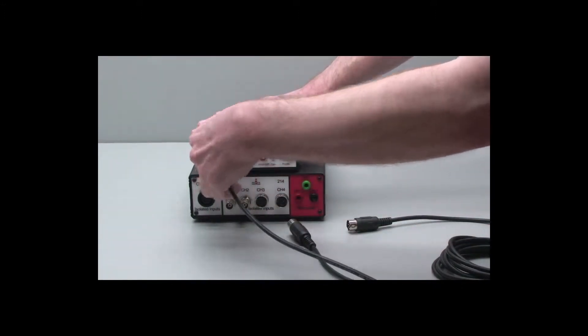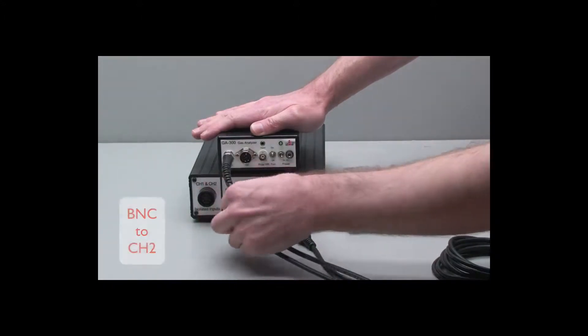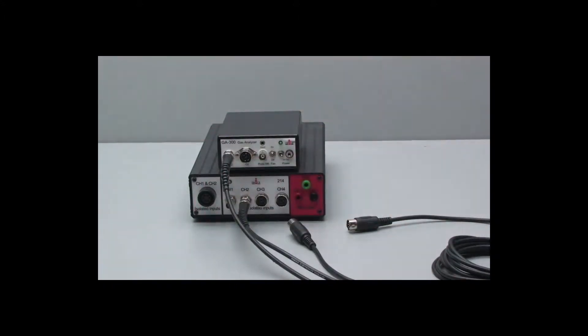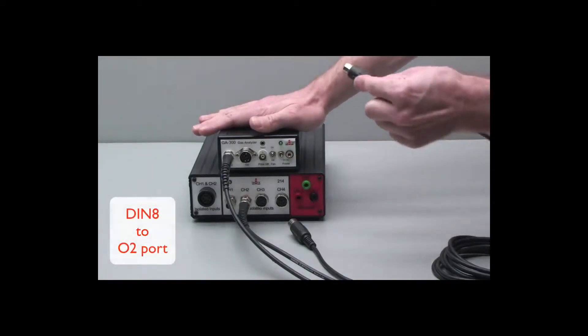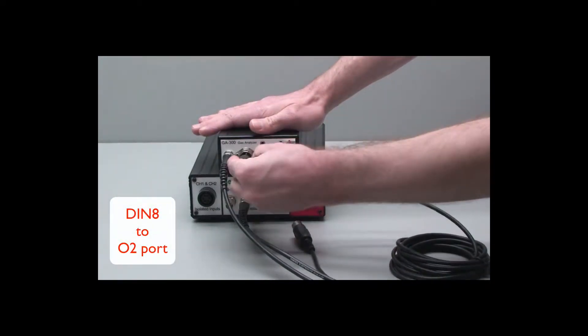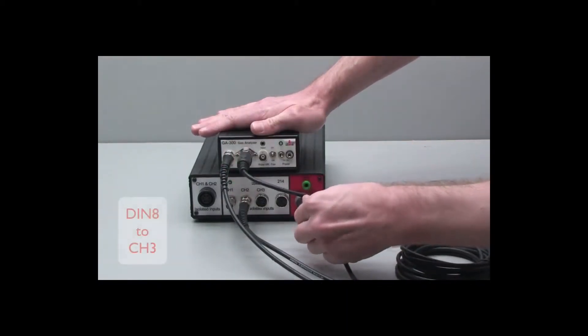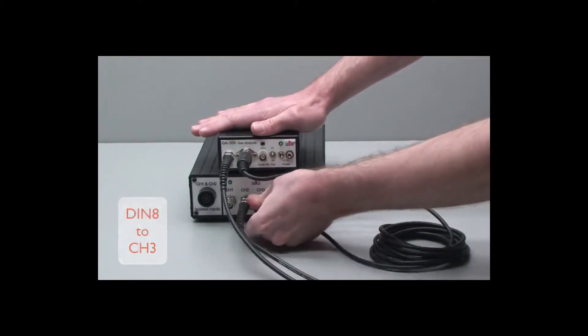and the other end goes to channel 2 of the iWorks 214. Take the DIN8 to DIN8 cable, one end goes to the O2 port, and the other end goes to channel 3 of the iWorks 214.